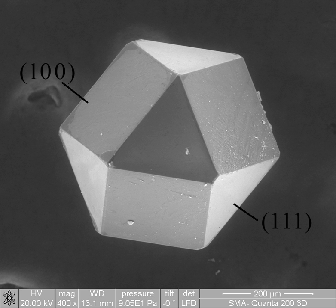Macrostructure is the appearance of a material in the scale of millimeters to meters—it is the structure of the material as seen with the naked eye.